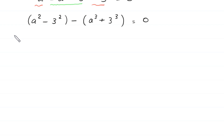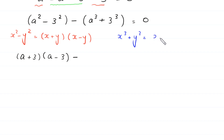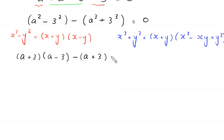Using the algebraic identity x² - y² = (x+y)(x-y), the term (a² - 3²) becomes (a+3)(a-3). Using the identity x³ + y³ = (x+y)(x² - xy + y²), the term (a³ + 3³) becomes (a+3)(a² - 3a + 9). So we have (a+3)(a-3) minus (a+3)(a² - 3a + 9) = 0.